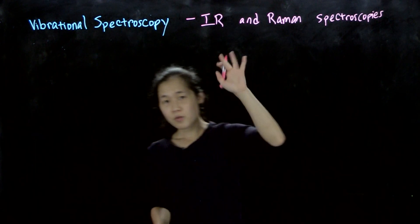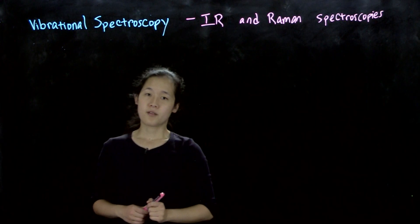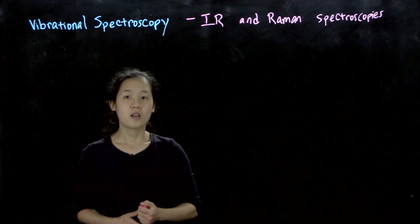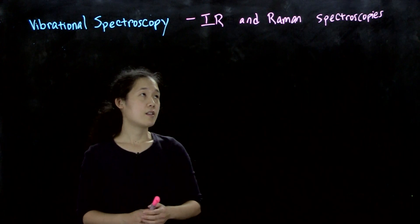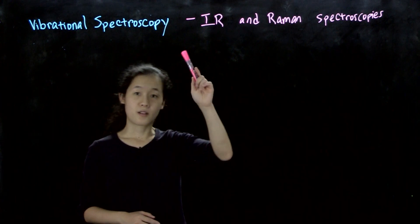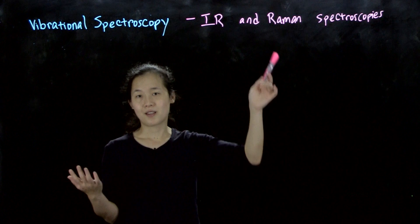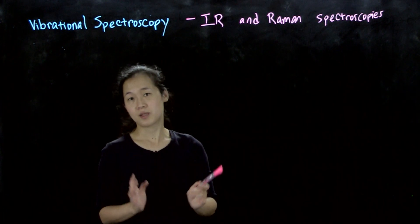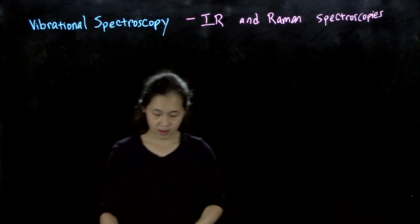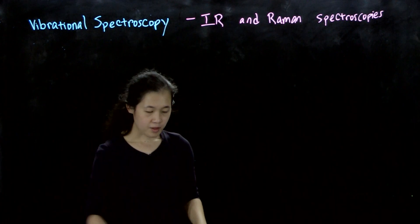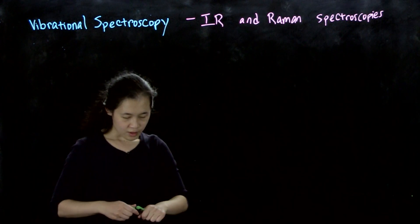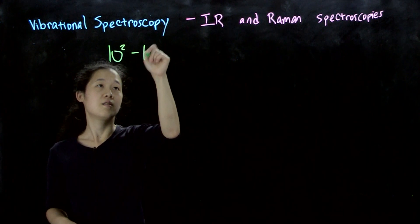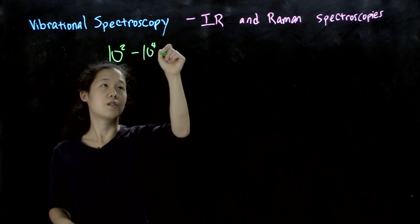These are two methods of measuring vibrational motion in molecules — the energies of your different vibrations. The setup is different and they also sometimes measure different vibrations themselves, which we'll talk about in a little bit. Typically vibrational motions come in the area of 10² to 10⁴ wave number.